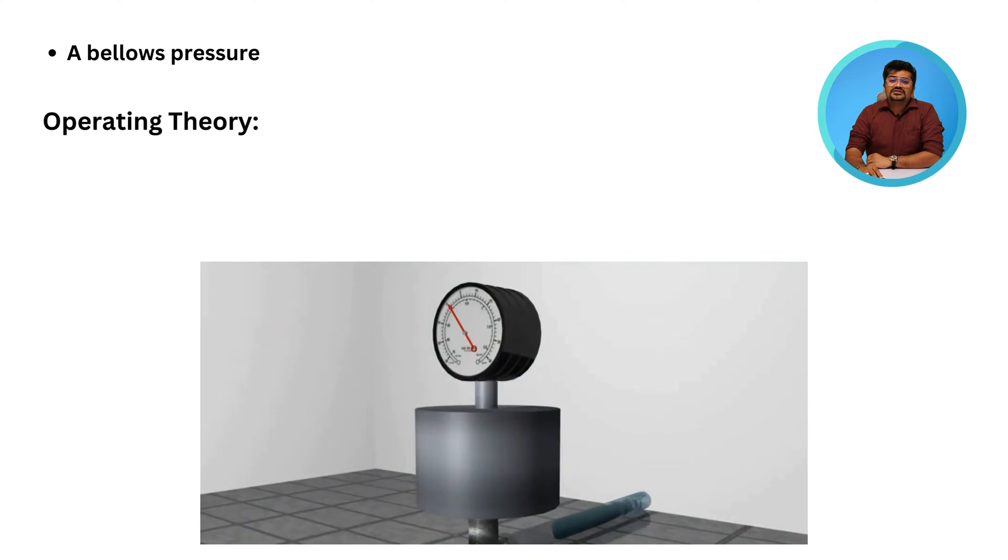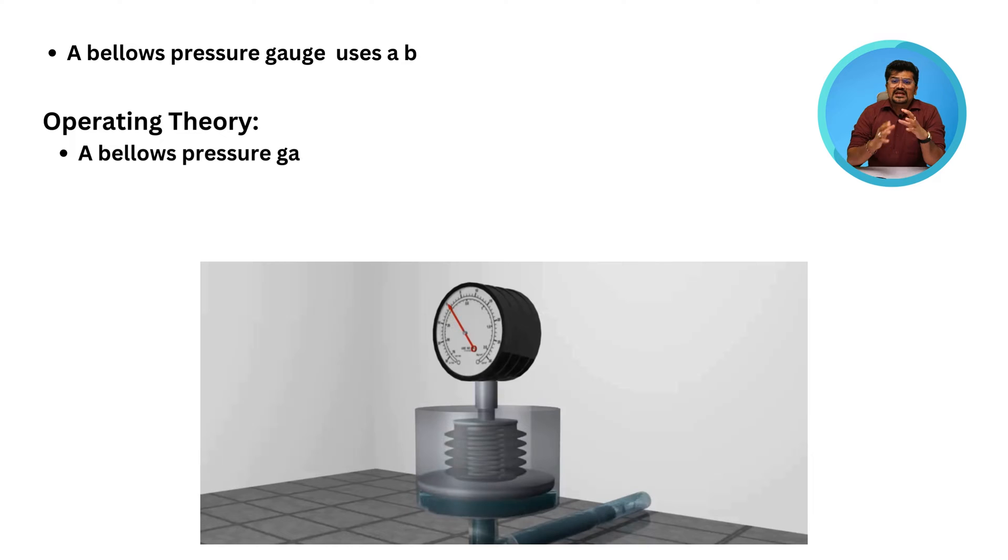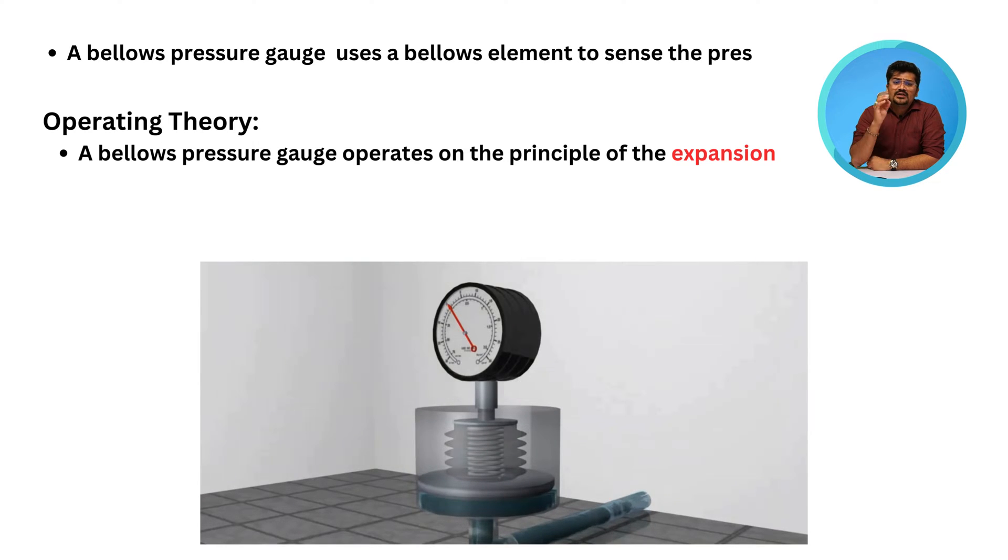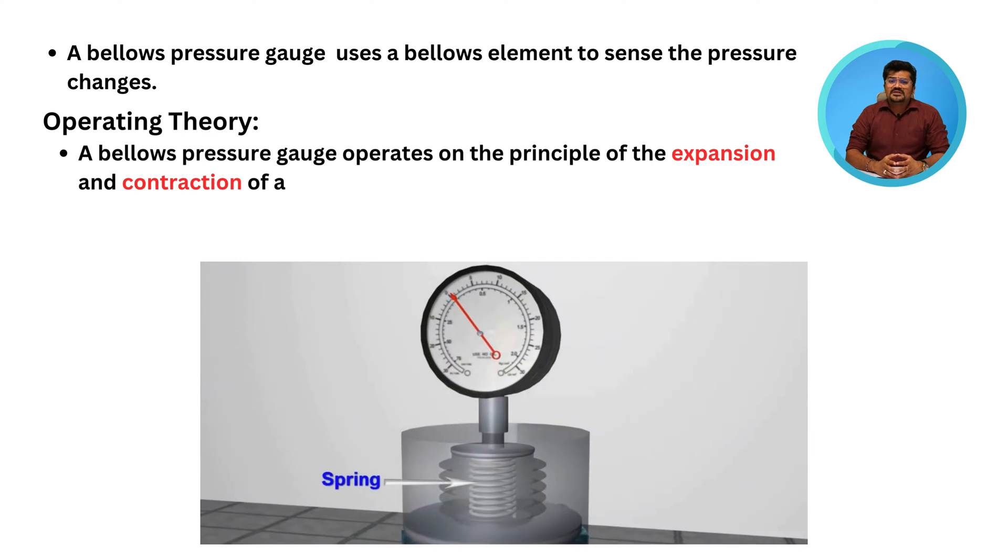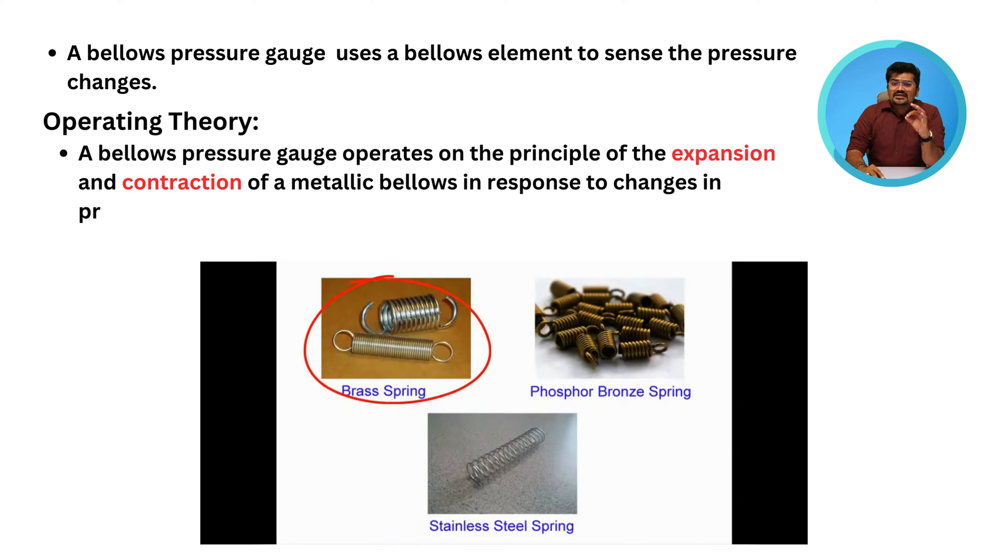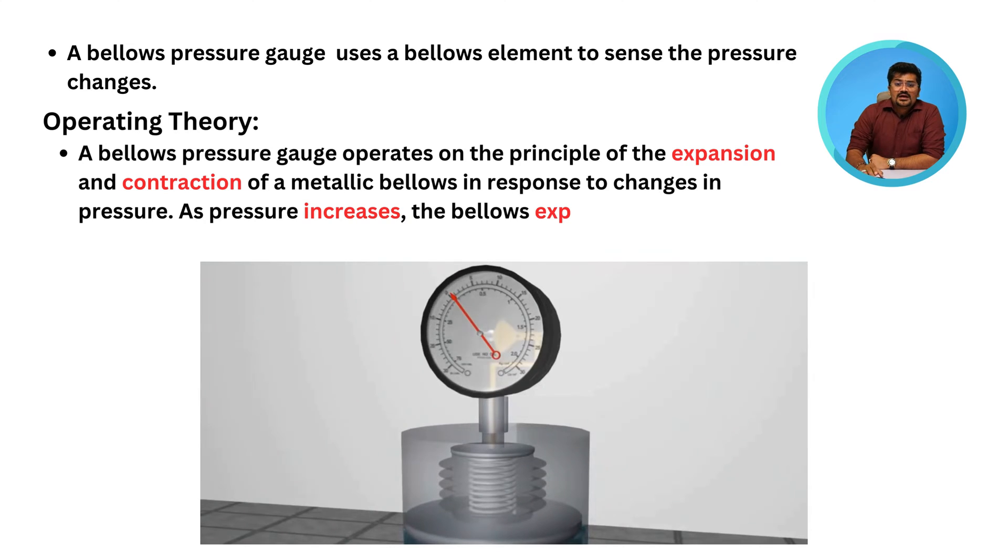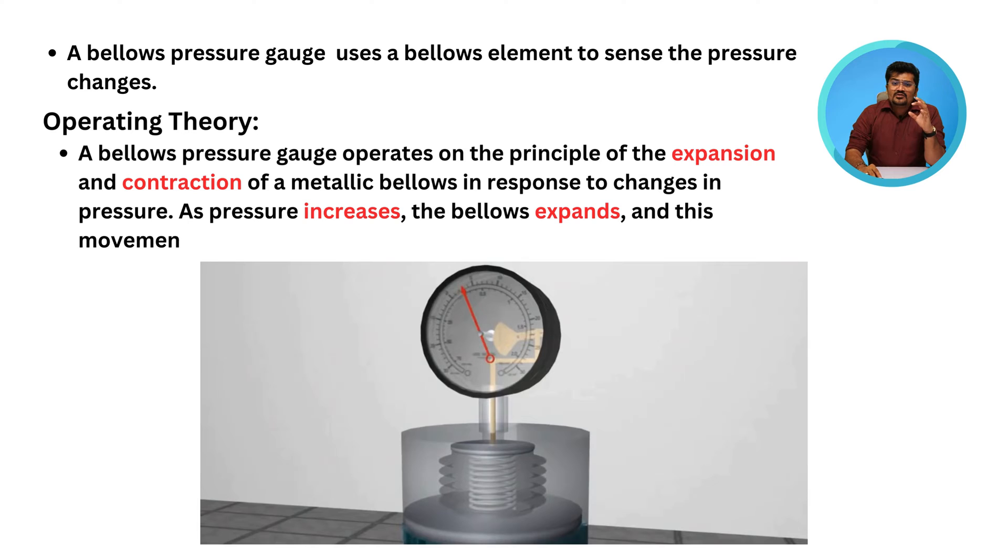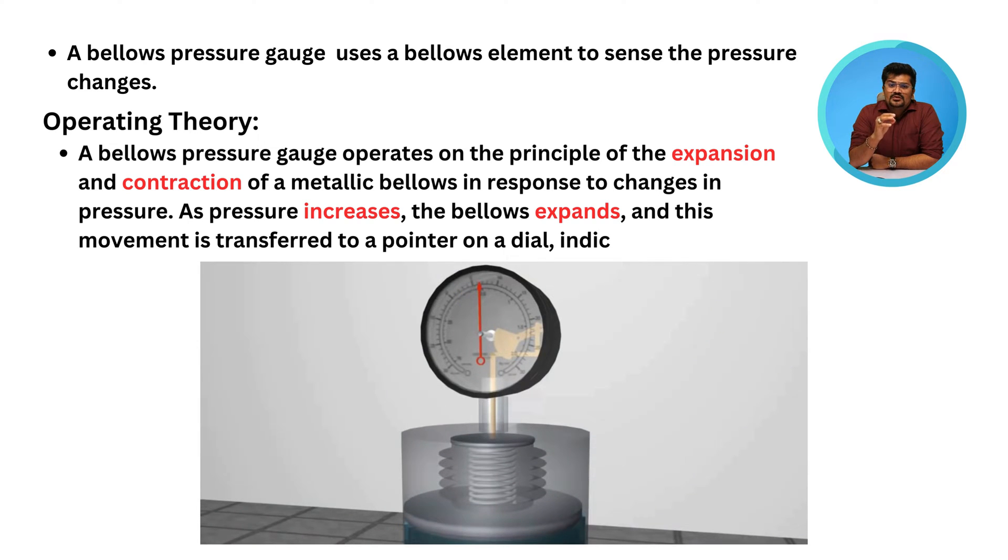A bellow pressure gauge uses a bellow element to sense pressure changes. It operates on the principle of expansion and contraction of a metallic bellows in response to pressure changes. As pressure increases, the bellow expands, and this movement is transferred to a pointer or dial indicating the pressure.